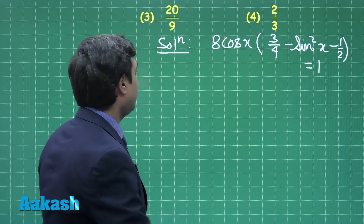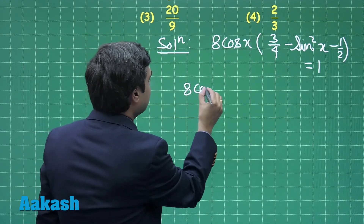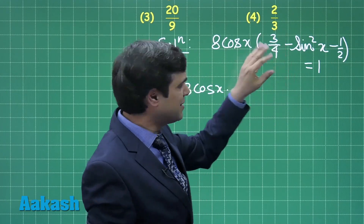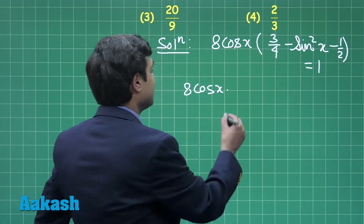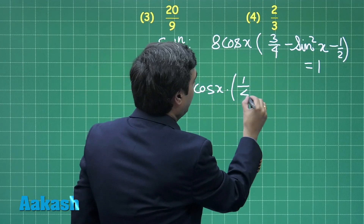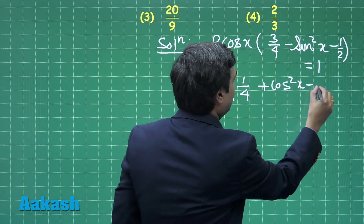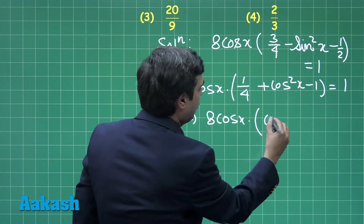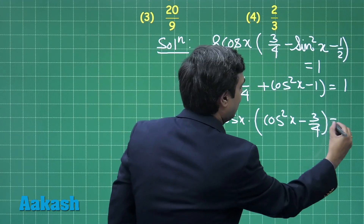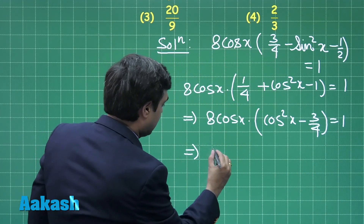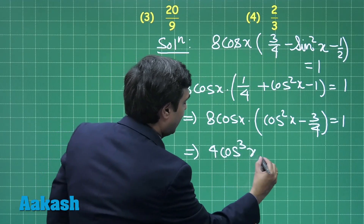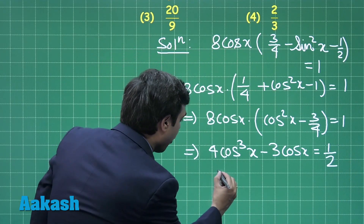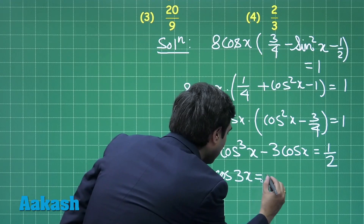Converting sin²x, we write 3/4 − 1/2, giving 1/4 − sin²x. Rewriting using cos²x: 1/4 + cos²x − 1 = 1, so 8cos(x)(cos²x − 3/4) = 1, which gives 8cos(x) · (4cos²x − 3)/4 = 1, i.e., 2cos(3x) = 1, so cos(3x) = 1/2.